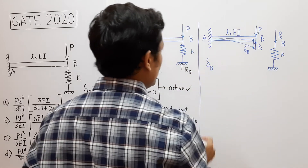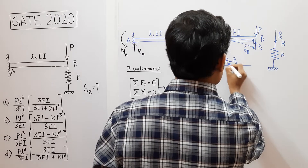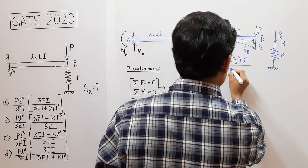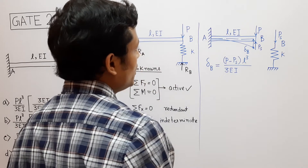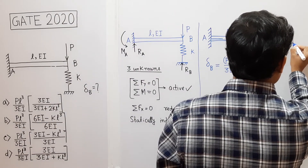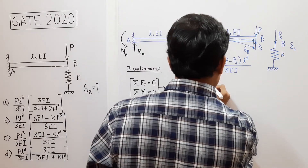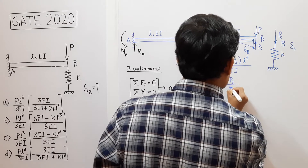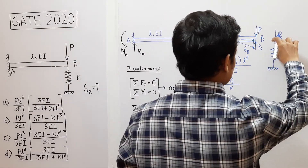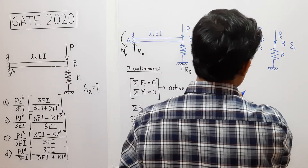The deflection delta B of the beam at point B equals (P minus P_s) L³ / 3EI, since the net force is P minus P_s. Now, the deflection of the spring at this point is delta S. Delta S equals P_s / K, so the spring deflects by amount delta S = P_s / K.